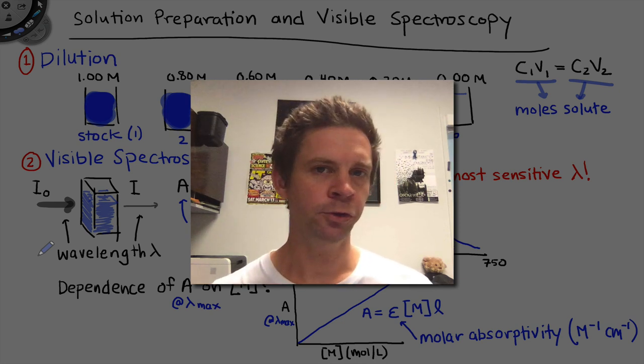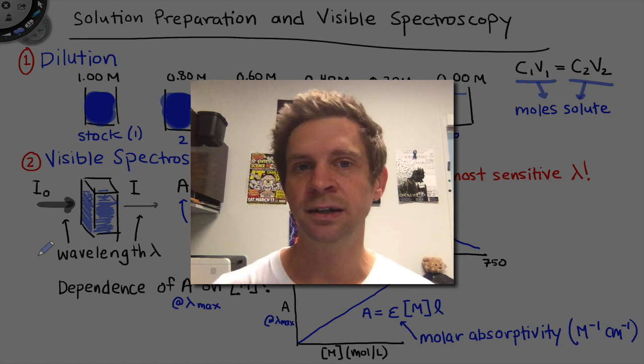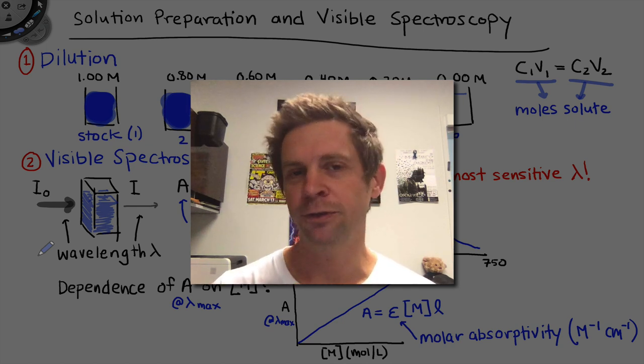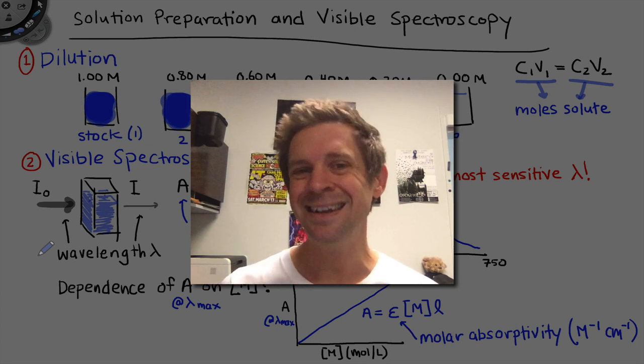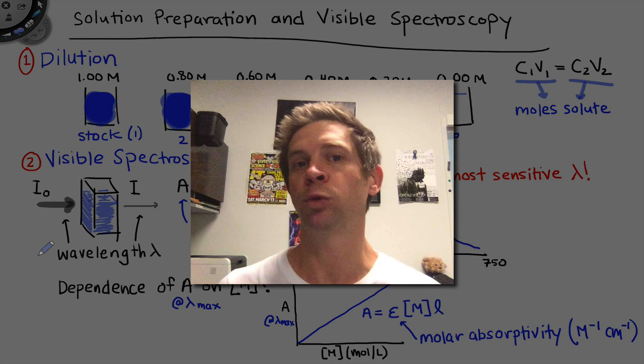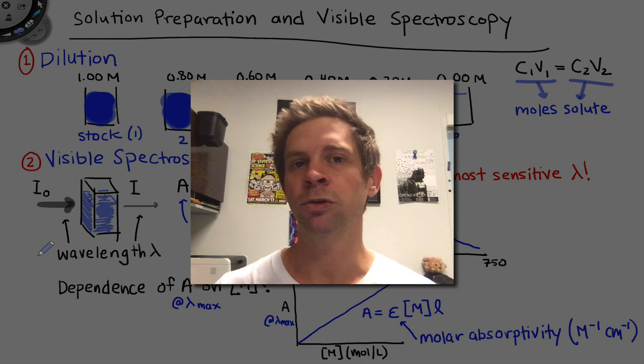We're going to prepare a number of different solutions containing copper 2-ion at various concentrations, perform visible spectroscopy on those solutions, and assess the dependence of the maximum absorbance on concentration. Then we're going to apply that relationship between absorbance and concentration to the study of a chemical reaction.